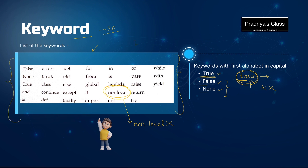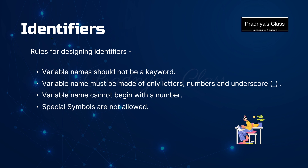Just have a look at the list of keywords and you can solve questions related to keywords. The second important token is identifier. You will surely get one question based on it, where you need to find out the valid or invalid identifier.